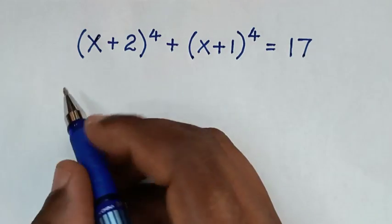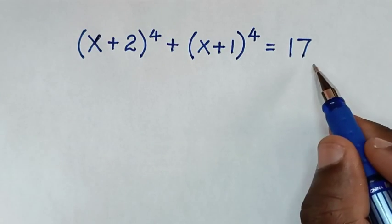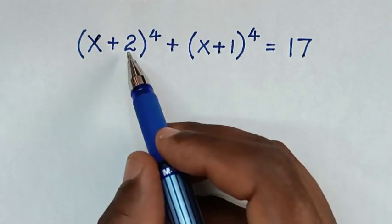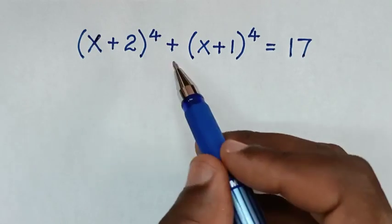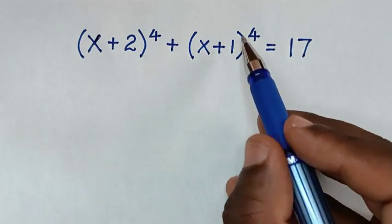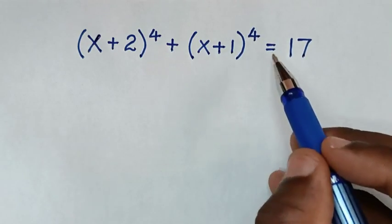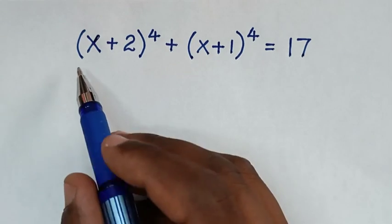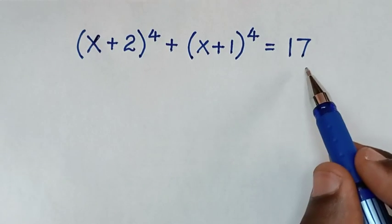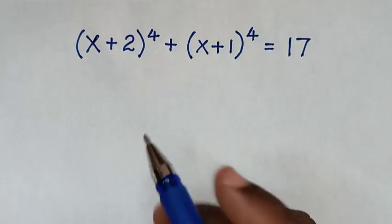Hello, you are welcome to solve this math problem which is (x+2)⁴ + (x+1)⁴ = 17, to find the values of x from this equation.